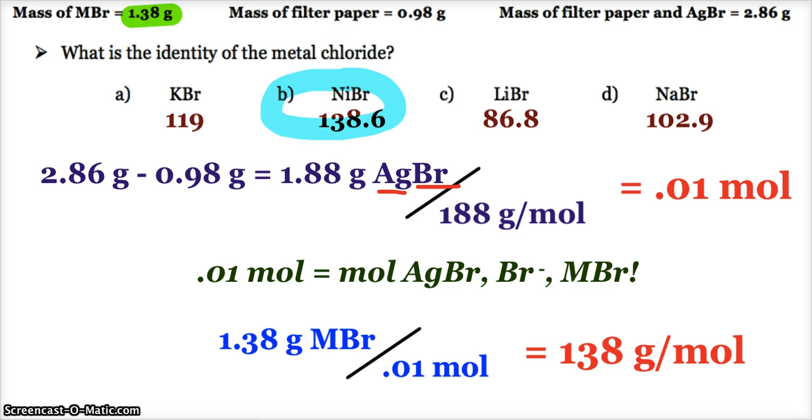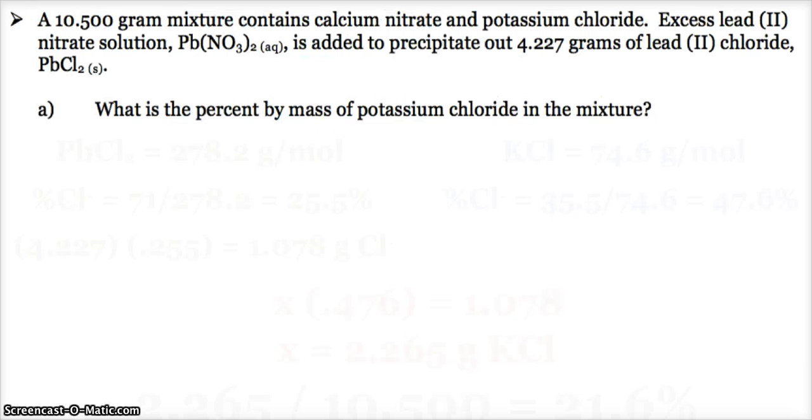Pretty fun, huh? Alright, let's look at one more example. This one is very similar to one of our post-lab questions for our gravimetric analysis lab, but it says I have a 10.5 gram mixture containing calcium nitrate and potassium chloride. Are those soluble in water? You bet your bippy, because all nitrate and all potassium compounds are soluble in water. AP wants us to know that.